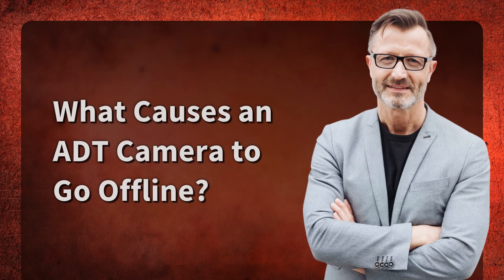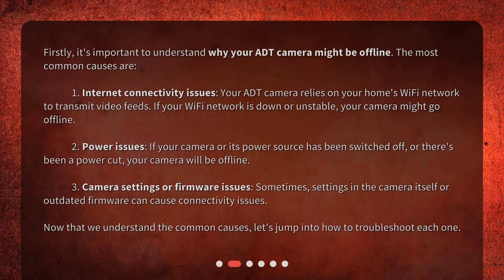What causes an ADT camera to go offline? First, it's important to understand why your ADT camera might be offline. The most common causes are: 1. Internet connectivity issues. Your ADT camera relies on your home's Wi-Fi network to transmit video feeds. If your Wi-Fi network is down or unstable, your camera might go offline.